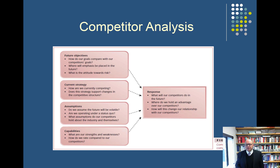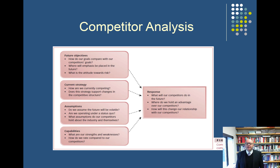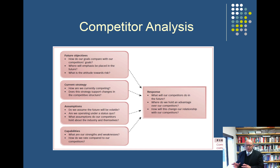We need to understand our competitors' current strategies — how are they currently competing, what sorts of competitive actions do they take in the marketplace, and what do these tell us about the strategies they're trying to pursue? We need to understand the assumptions those competitors have about the industry in which we're operating — how do they see the future and what direction are they trying to take their organisation? Are they looking to move into new industries or new markets? We also need to be really clear about their strengths and weaknesses — understanding what our competitors do well and what they don't do so well gives us insights into the types of strategies we should develop and how we should avoid competing with these organisations.